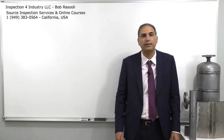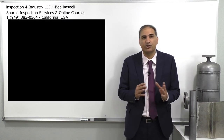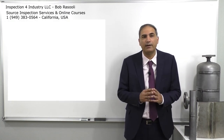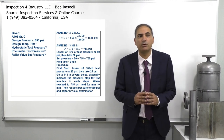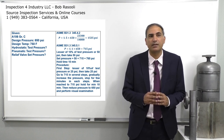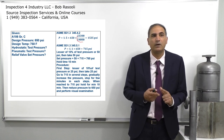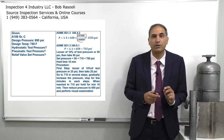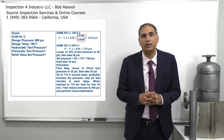Here is an example that you can see on the screen. The material is A106 Grade C. The design pressure is 650 psi and the design temperature is 750 degrees Fahrenheit. We need to find the hydrostatic test pressure, the pneumatic test pressure, and the relief valve set pressure for pneumatic testing. Let's write the formula.